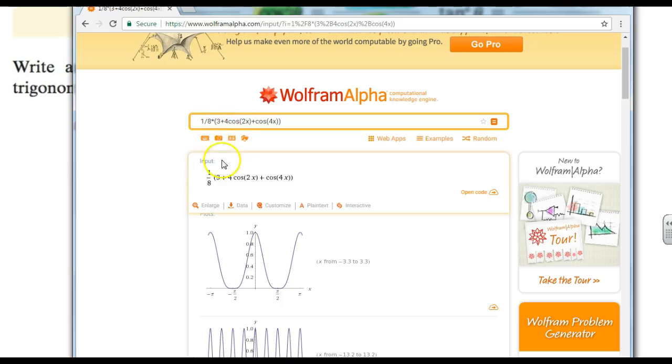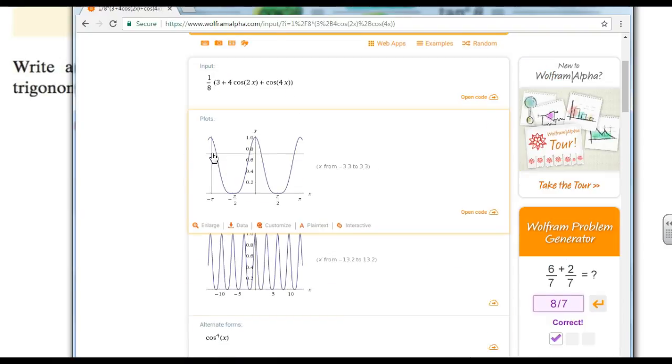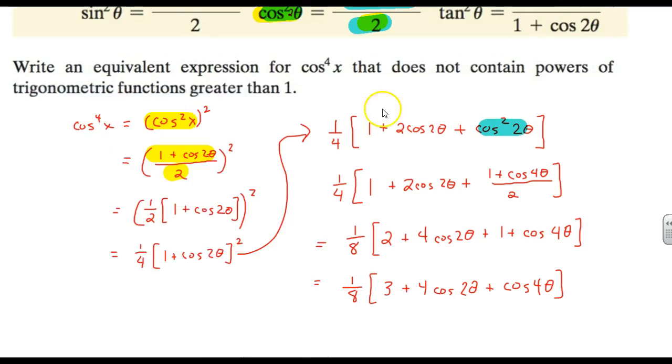You could also type that in to something like Wolfram Alpha. So once again, there's what I finish up with my last step. If you scroll down, they'll do alternative forms, and there's cosine 4th x. So that is equivalent, and Wolfram Alpha can check your answer. Desmos graphing and showing that the graphs overlap everywhere can check your answer as well.